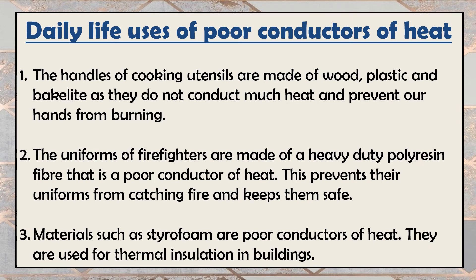Now let's discuss some uses of poor conductors of heat in our daily life. The handles of cooking utensils are made of wood, plastic, and bakelite because they are poor conductors of heat — they do not conduct much heat and prevent our hands from burning. The uniforms of firefighters are made of a heavy-duty poly resin fiber called melamine, which is a poor conductor of heat that prevents the uniforms from catching fire. Materials such as styrofoam are also poor conductors and are used for thermal insulation in buildings.